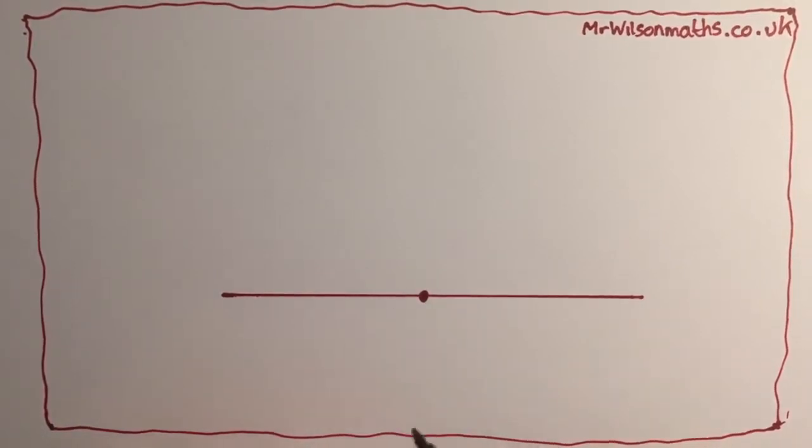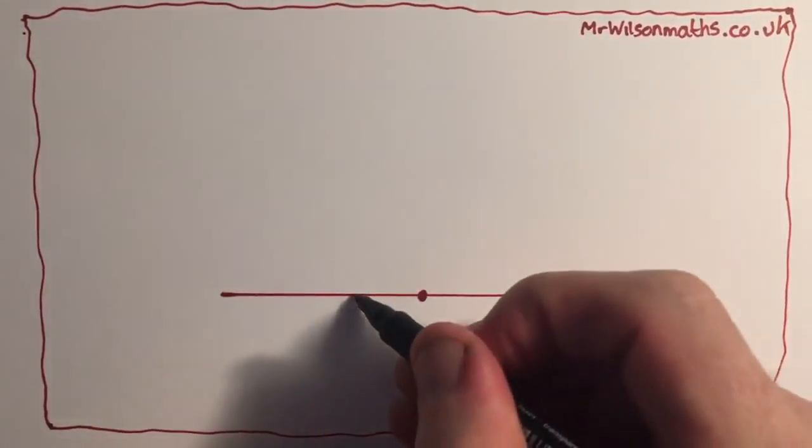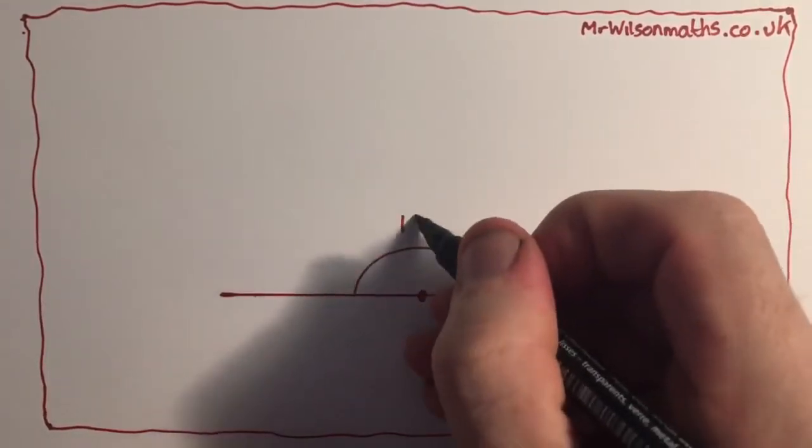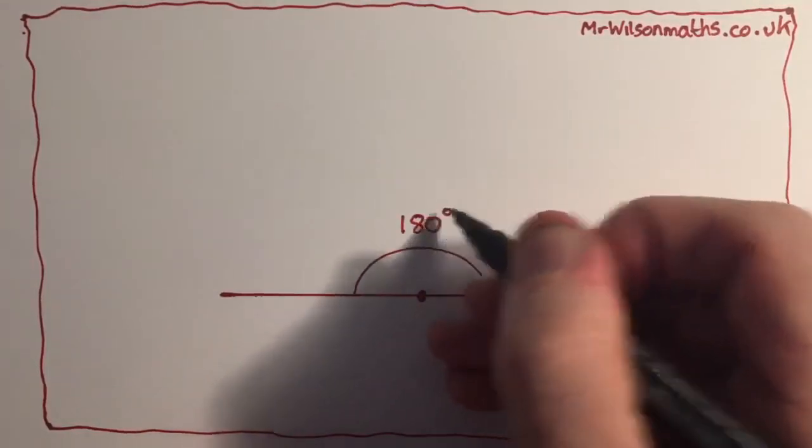As you can see, we have a line in front of us. Now we already know that if I measure the angles on that line, I will get 180 degrees.